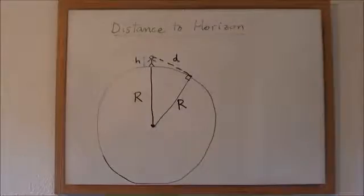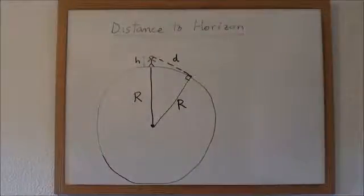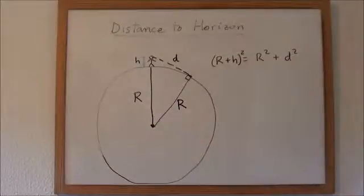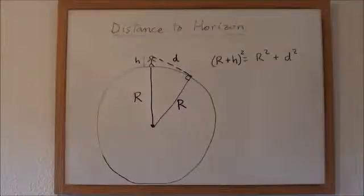Where the hypotenuse is R plus h, and the legs are R, the radius of the earth, and d, the distance to the horizon. So let's apply the Pythagorean theorem to this right triangle. The square of the hypotenuse equals the sum of the squares of the legs. That is, R plus h squared equals R squared plus d squared.